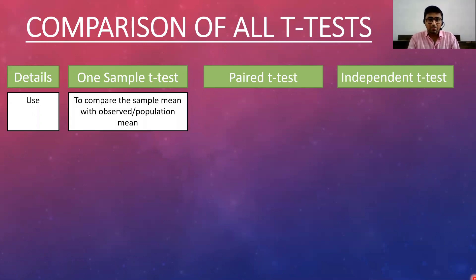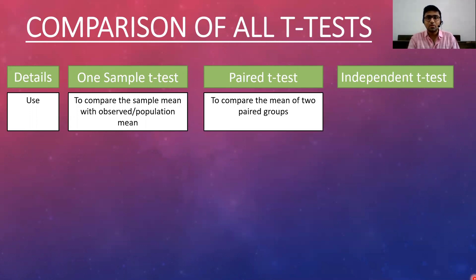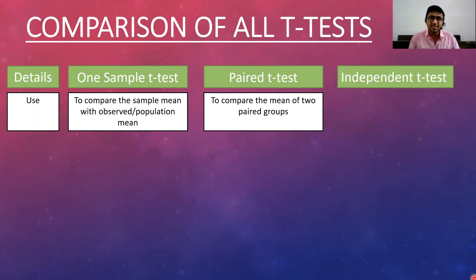The use of the one sample T-test is to compare the sample mean with a given population mean or observed mean. You can find a link on how to perform the one sample T-test in SPSS in the description or on your screen. The paired T-test is used to compare the means of two paired groups, where the observation in the first sample is associated with the observation in the second sample.